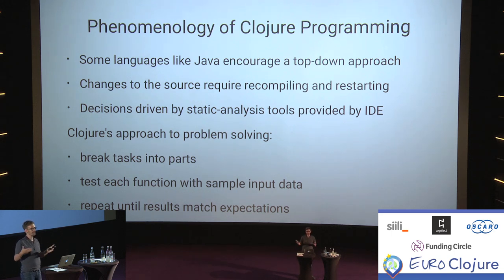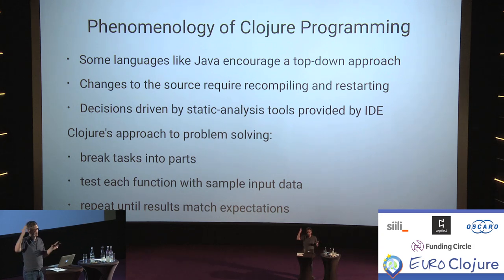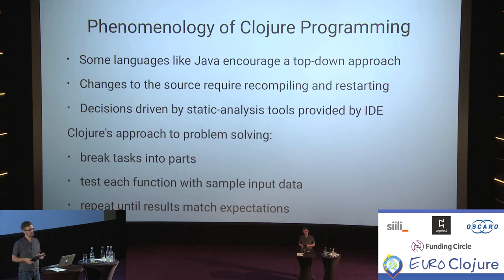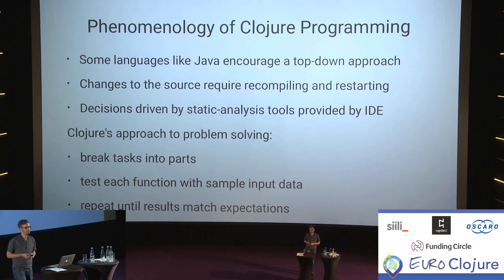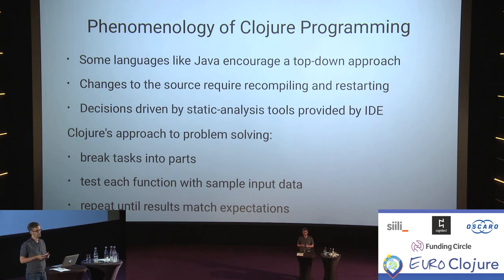Some languages like Java sort of encourage a top-down approach to programming. Whenever you make a change to the source, it requires recompiling the program and restarting the process. A lot of the decisions are driven by static analysis tools, like the ones provided by your IDE. The approach that Clojure takes — or that a lot of Clojure programmers take — to problem solving, is different.